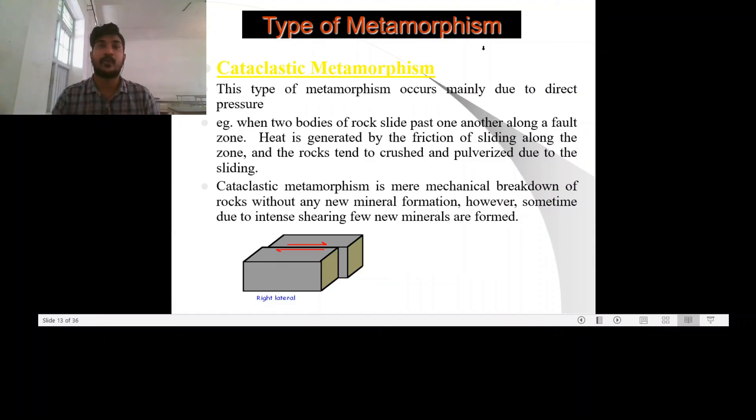The different types of rock formed by the dynamic metamorphism vary with the depth from the surface. As we go deep into the earth's surface, the temperature and pressure go increasing. So, the rocks which are formed by the cataclastic or dynamic metamorphism in such a situation will be different from the one which is formed in the surface of the earth.